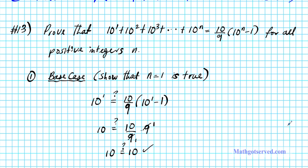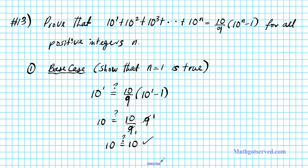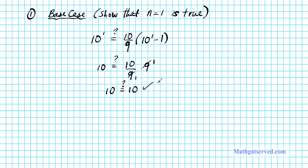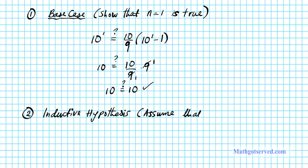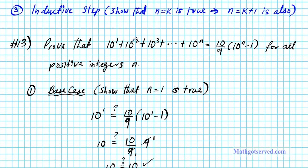Now let's move on to the second part of our proof by induction, the inductive hypothesis. We're going to make an assumption. We're going to assume that n equals k is true. What we'll do is rewrite the original statement, substituting k for anywhere we see n, and assume that that statement is true for some k in the set of positive integers.